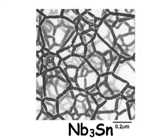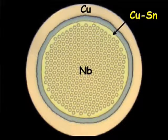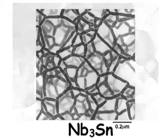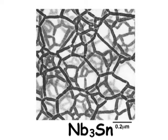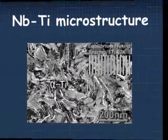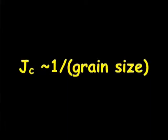Grain boundaries are important in both niobium-3-tin and niobium-titanium as sources of flux pinning. In both cases, the critical current density JC is inversely proportional to the grain diameter. The finer the grain size, the stronger the pinning, the higher the JC.